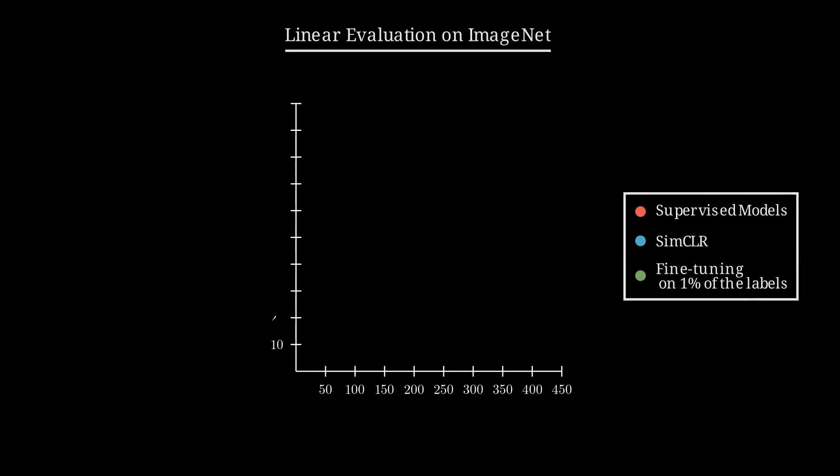SimCLR delivers outstanding performance almost surpassing fully supervised models. For instance, when tested on ImageNet classification, SimCLR achieves a top 1 accuracy of 76%, very close to the performances achieved with a supervised ResNet 50, all while using self-supervised learning without any labeled data.